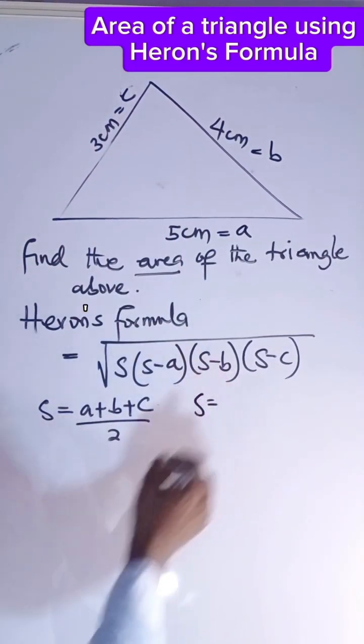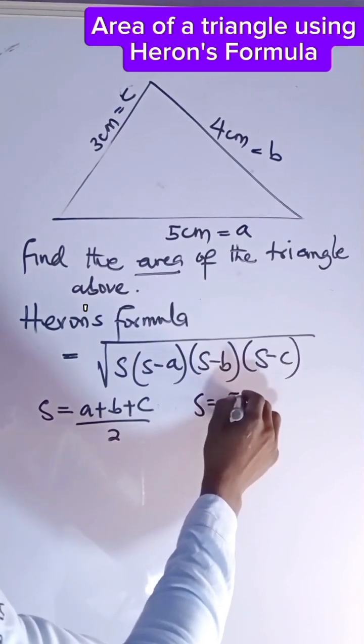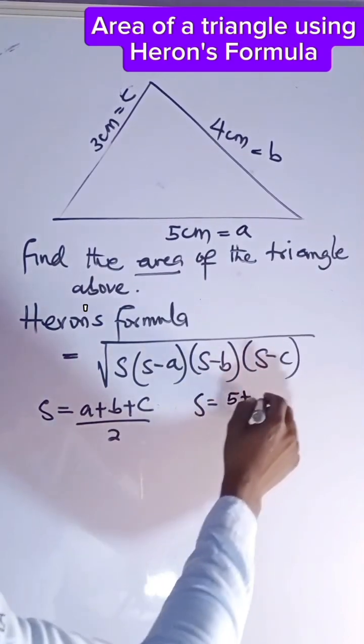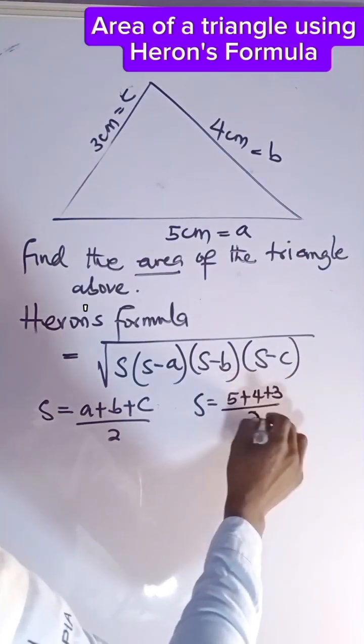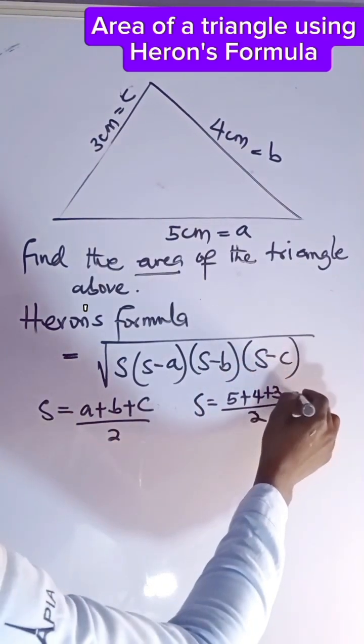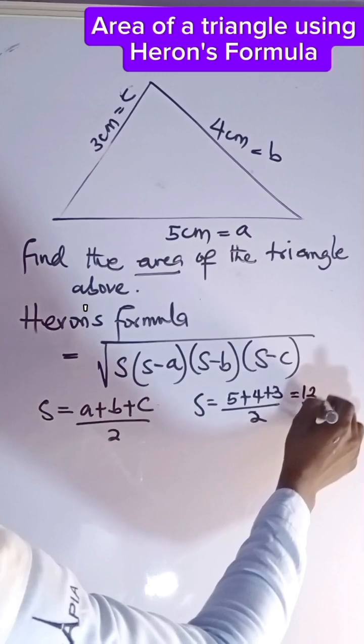Then our s will be equal to 5 plus b, which is 4, plus 3, divided by 2. 5 plus 4 is 9, plus 3 is 12, divided by 2, and that is 6.